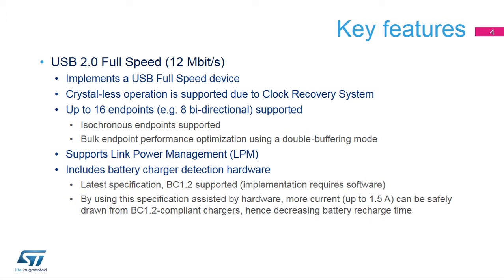Let's look at some of the key features of this USB Full-Speed Interface, which is a USB 2.0-compliant interface that operates at a 12 megabit per second bitrate. A USB FS device can be implemented. Crystal-less operation is supported. A total of 16 endpoints, 8 bi-directional, can be supported. Full support for isochronous endpoints. Bulk endpoints are able to use a double-buffering mode offering higher performance. In-built support for link power management adds enhanced power modes on top of the USB 2.0 specification. Battery charger detection allows for increased current to be drawn from BCI 1.2-compliant chargers, allowing up to 1.5-amp charging.